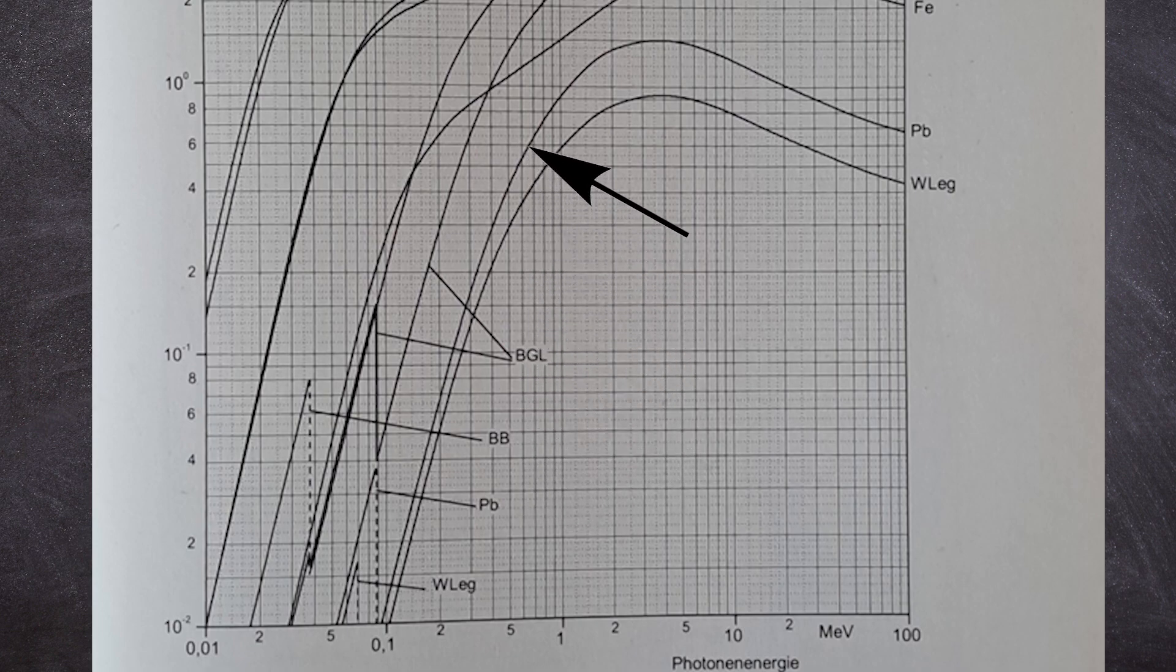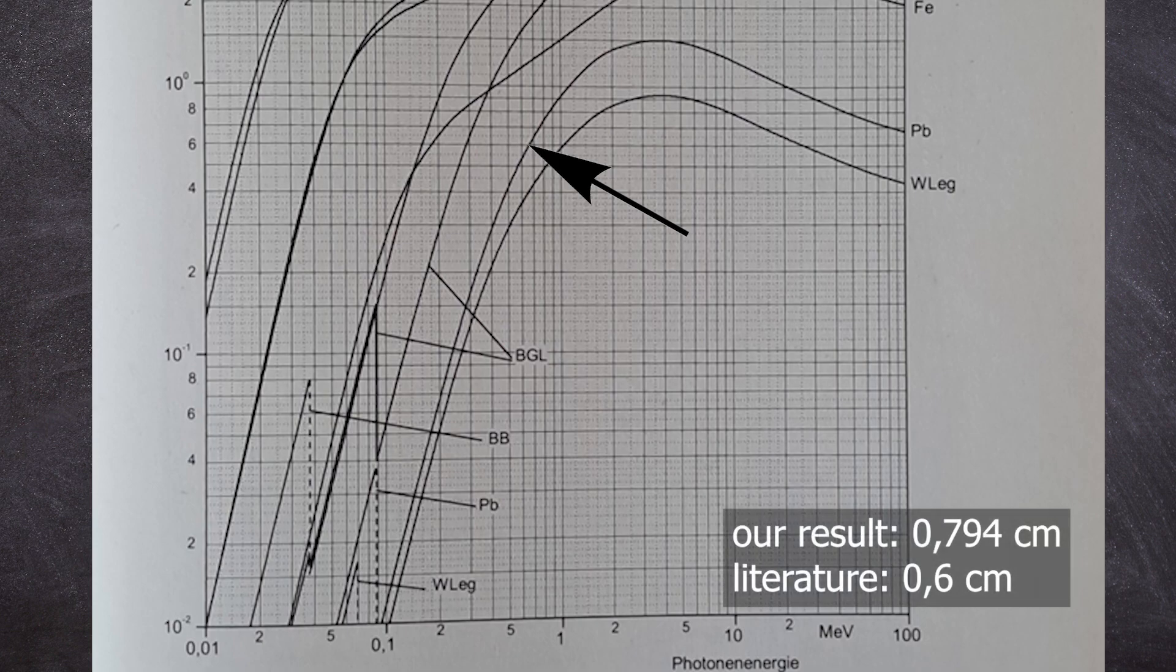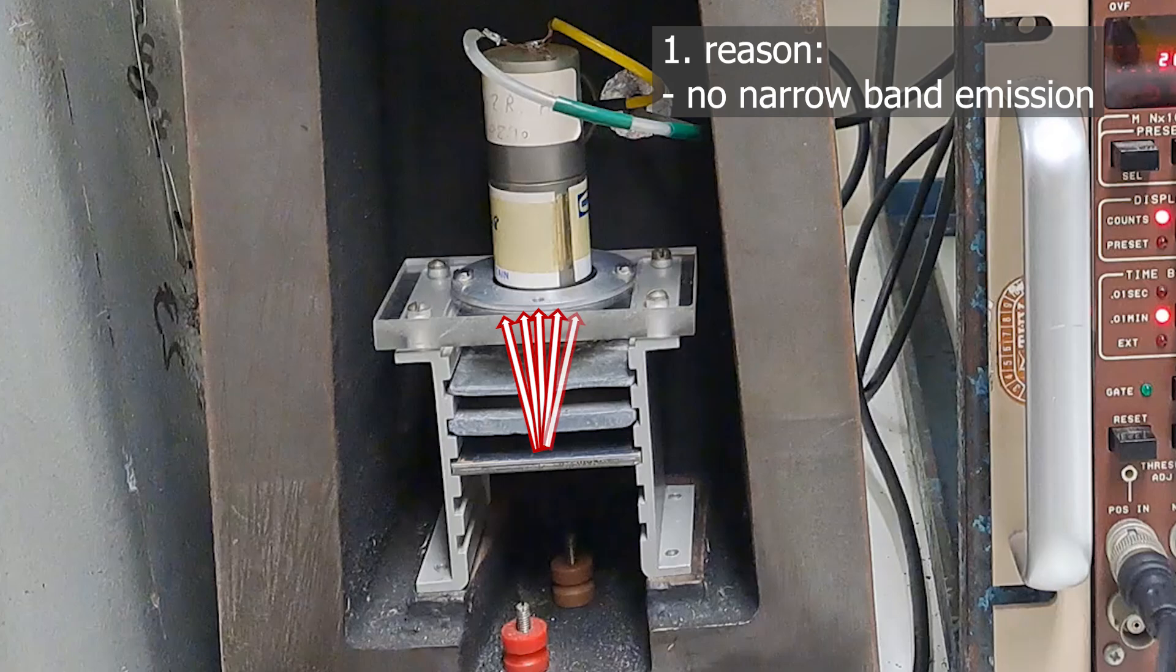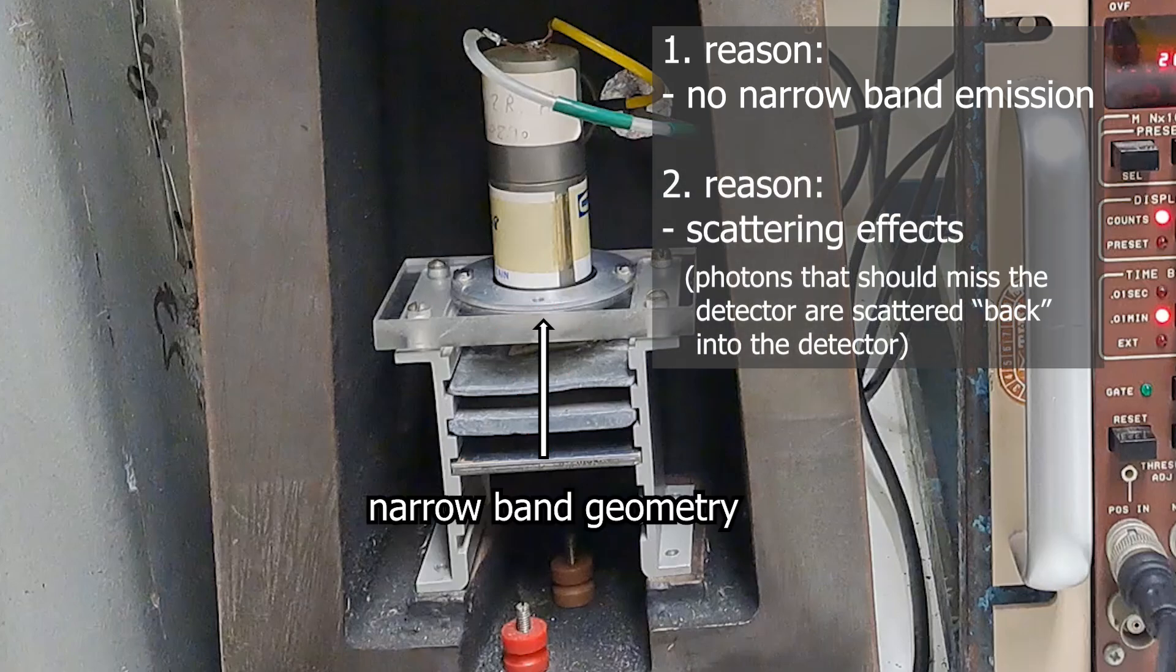Well in the literature the half value layer thickness is for narrow beam geometry. We don't have a narrow beam geometry. We have a point source in the third slot, so the gamma rays hit the lead layer with a broad spread. And scattering effects can occur in practical radiation protection. An additional dose caused by scattered radiation is taken into account with a dose increase factor b.